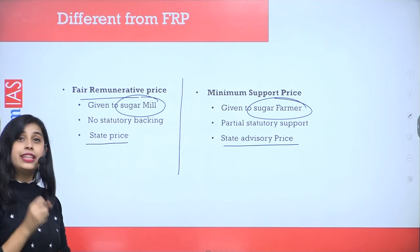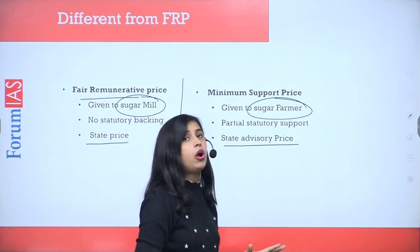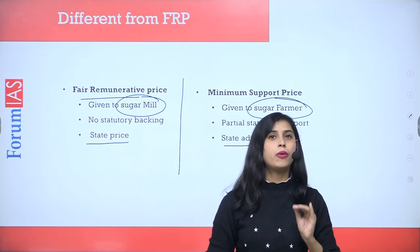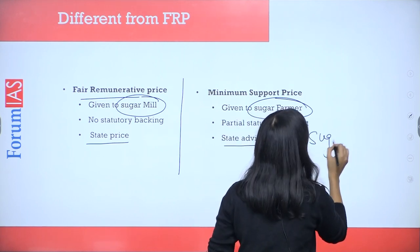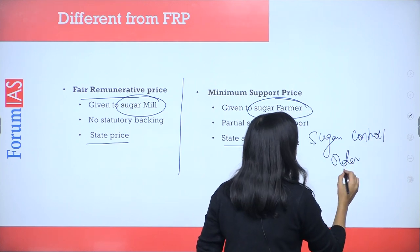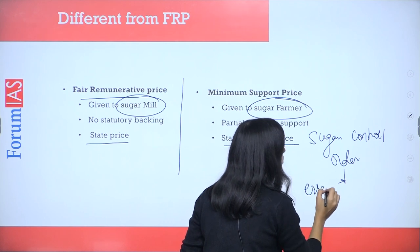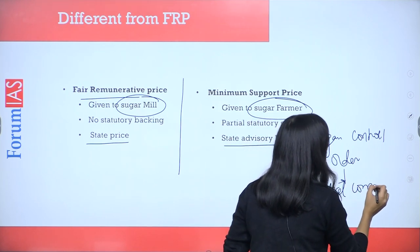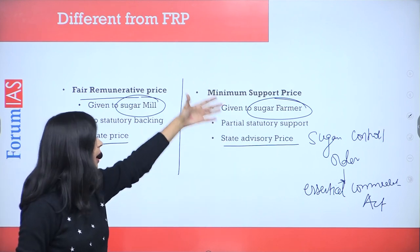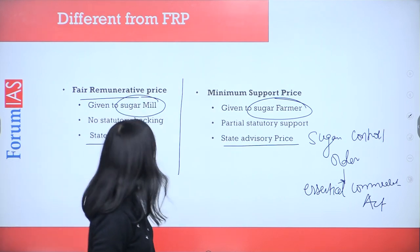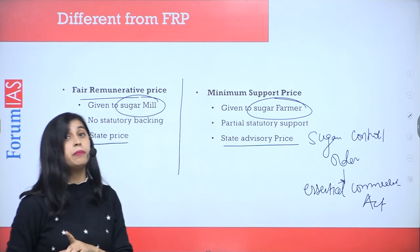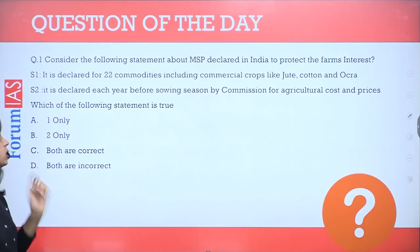Coming to the final difference: whether they have statutory backing or not. MSP does not have statutory backing. FRP, however, has partial statutory backing because it takes effect from the Sugarcane Control Order, which derives its legitimacy from the Essential Commodities Act. So there is no complete statutory backing for FRP, but since it comes from the Sugarcane Control Order under the Essential Commodities Act, FRP has partial statutory backing — while MSP does not have any backing like that.